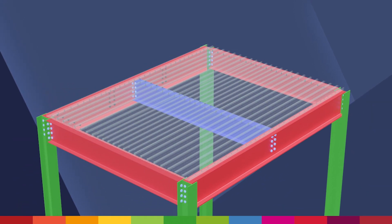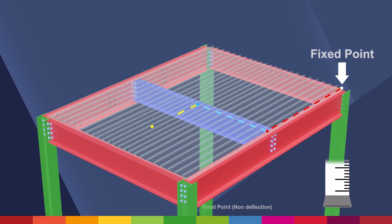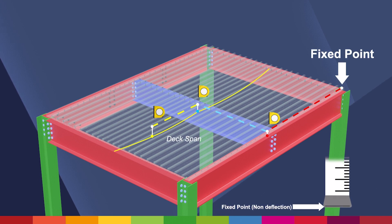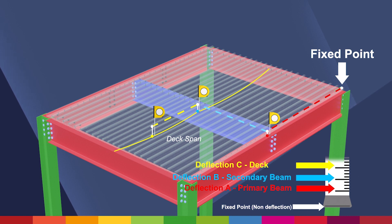Therefore, the compound deflection of the primary beam, secondary beam and deck will be in the region of A plus B plus C, and this will give the lowest point of the deck or slab.